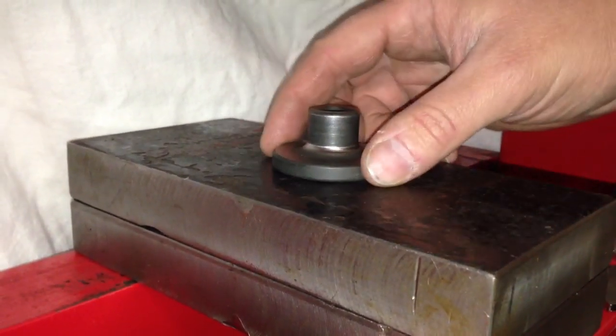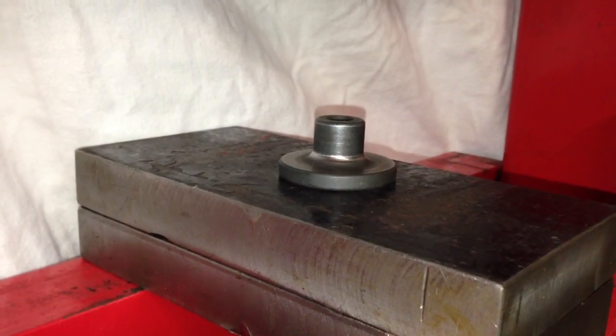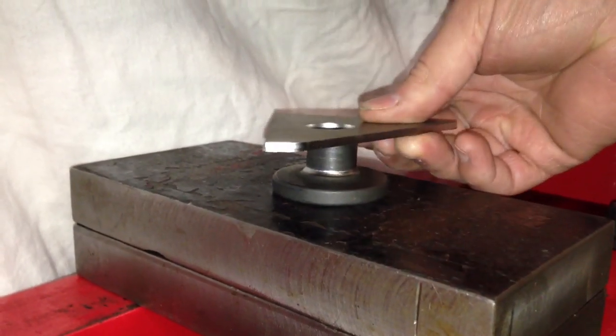First we simply load the bottom die onto your shop press. Next we take our pre-drilled plate and place it over that bottom die.